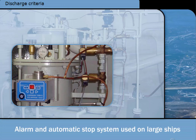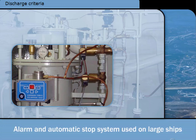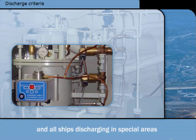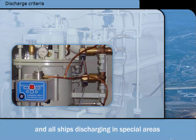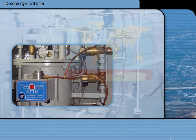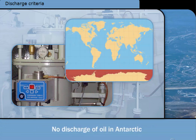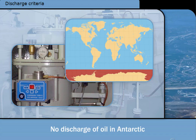Two sets of criteria to be met are listed in Annex 1, dependent on whether the ship is inside or outside a special area. The only difference is that discharges can only be made inside special areas if an oil content meter, alarm and automatic stop system is in use. The Antarctic is an extra special area: discharge of oil or an oily mixture into the sea is banned while inside the Antarctic.